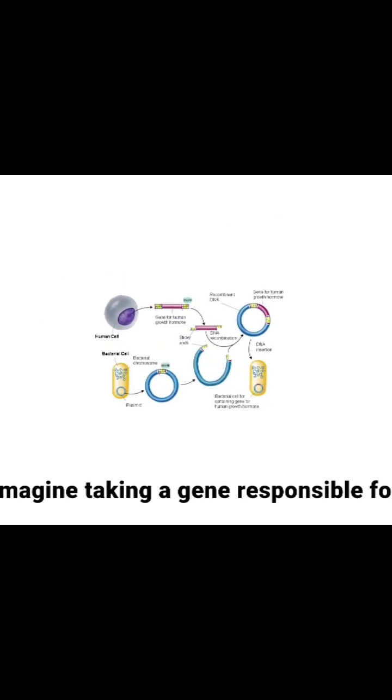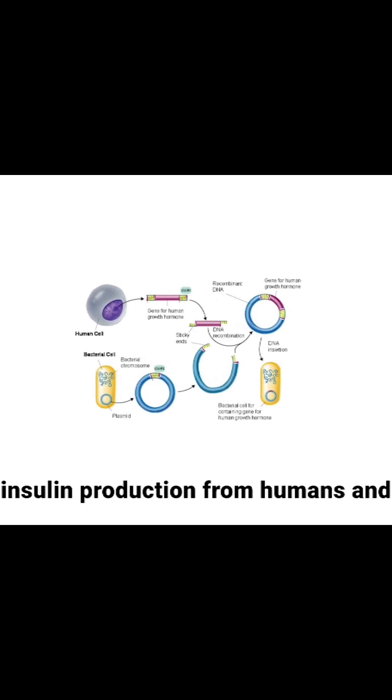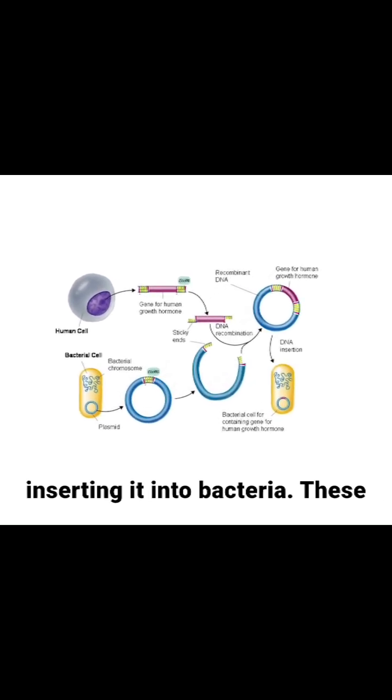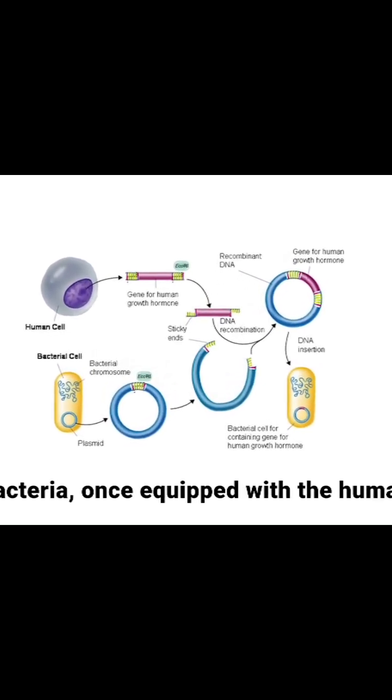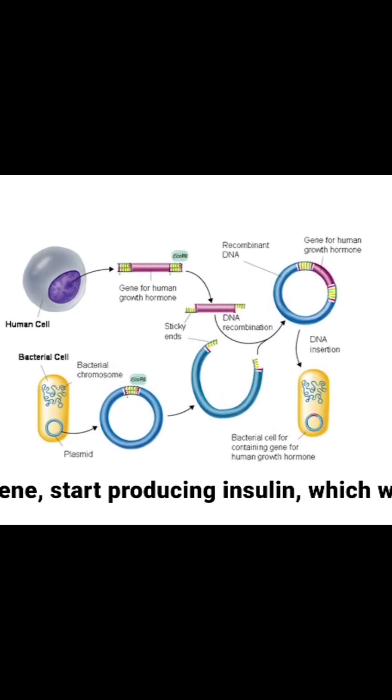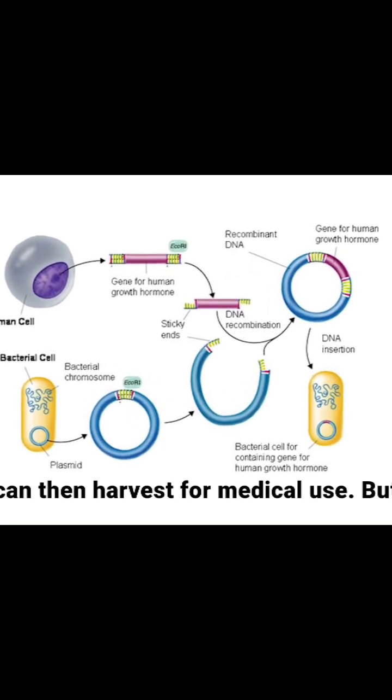Imagine taking a gene responsible for insulin production from humans and inserting it into bacteria. These bacteria, once equipped with the human gene, start producing insulin, which we can then harvest for medical use.